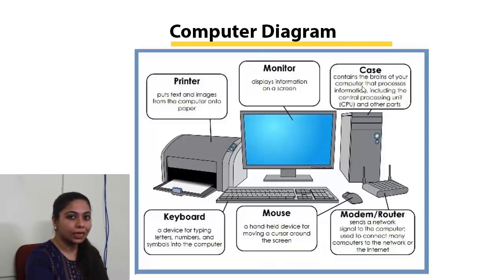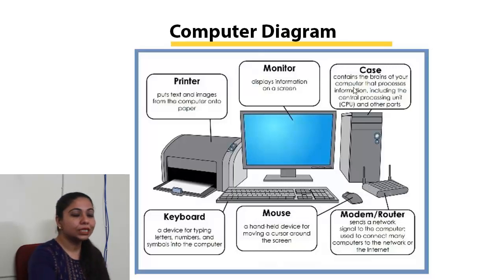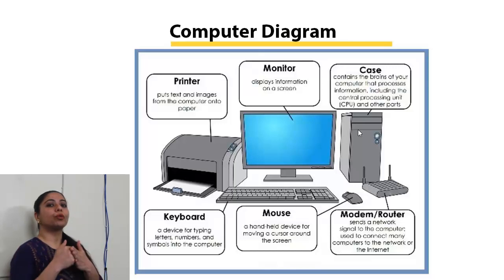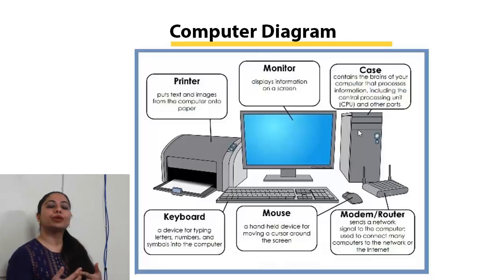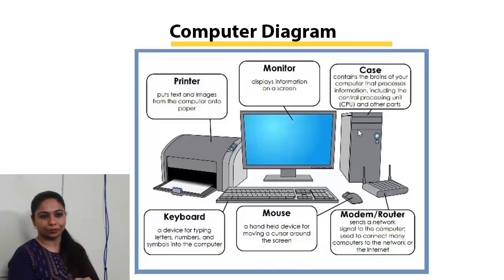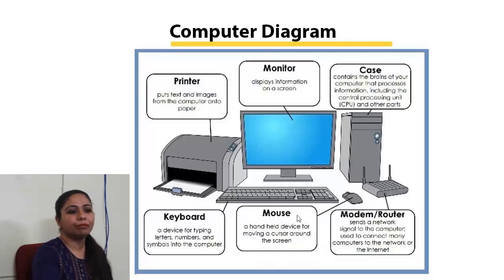The next important component is the case, also called the CPU. This contains the brain of your computer — the CPU processes information, including the central processing unit and other parts. Whatever information you provide to the computer is processed by the CPU. CPU stands for Central Processing Unit — it is the center of all processes carried out in a computer system.